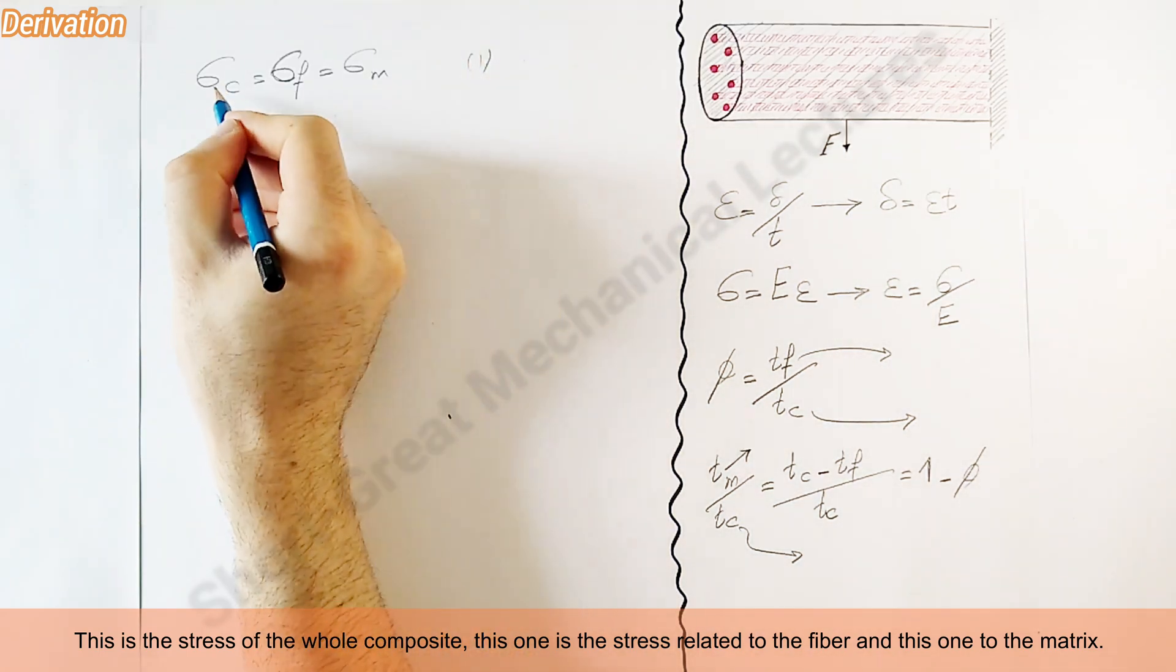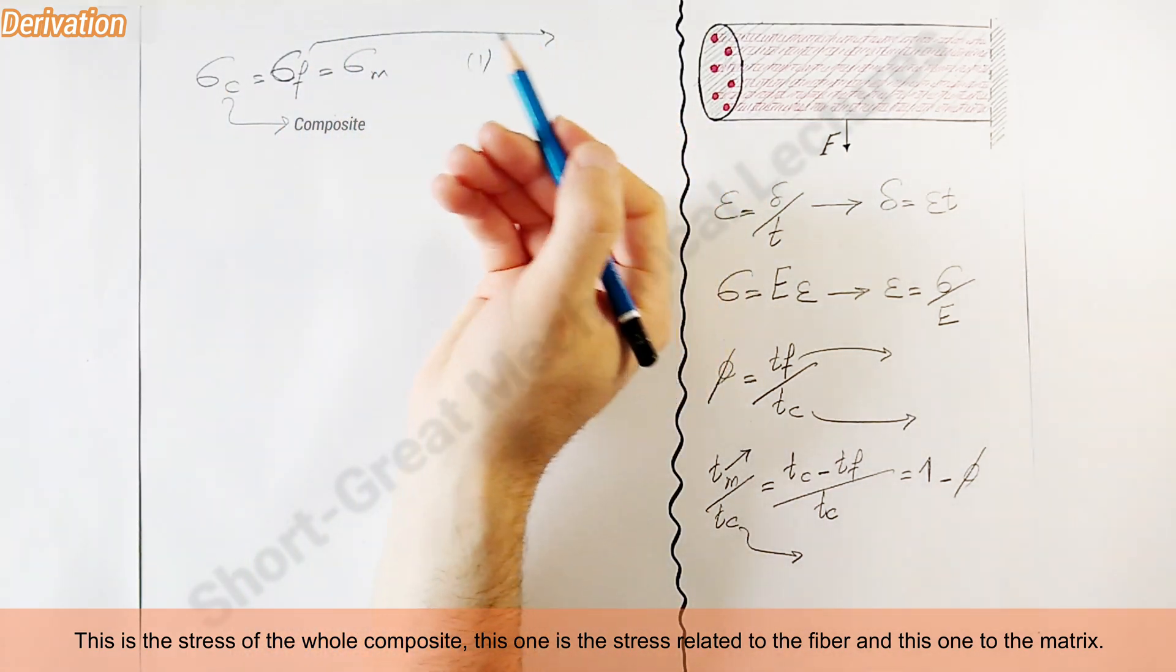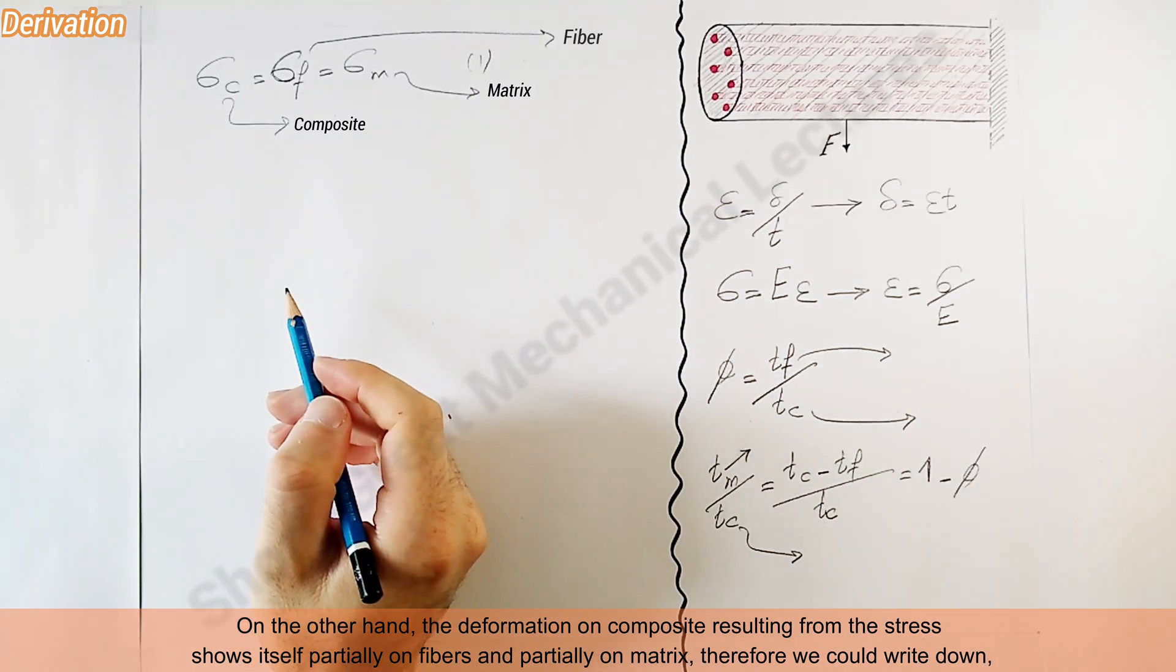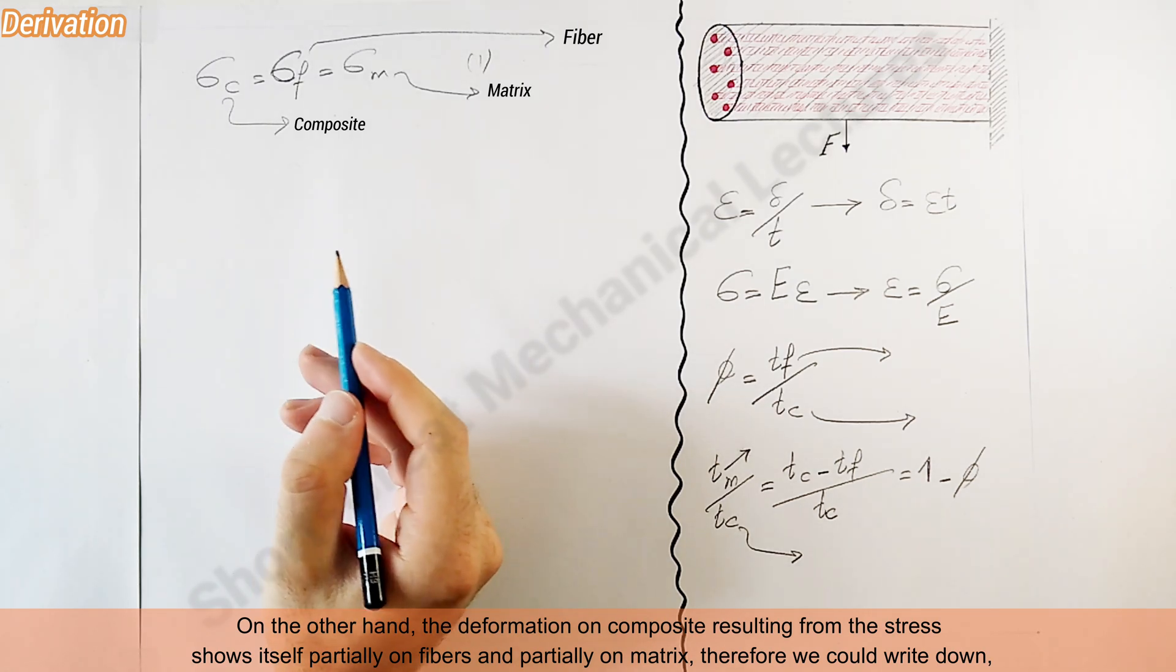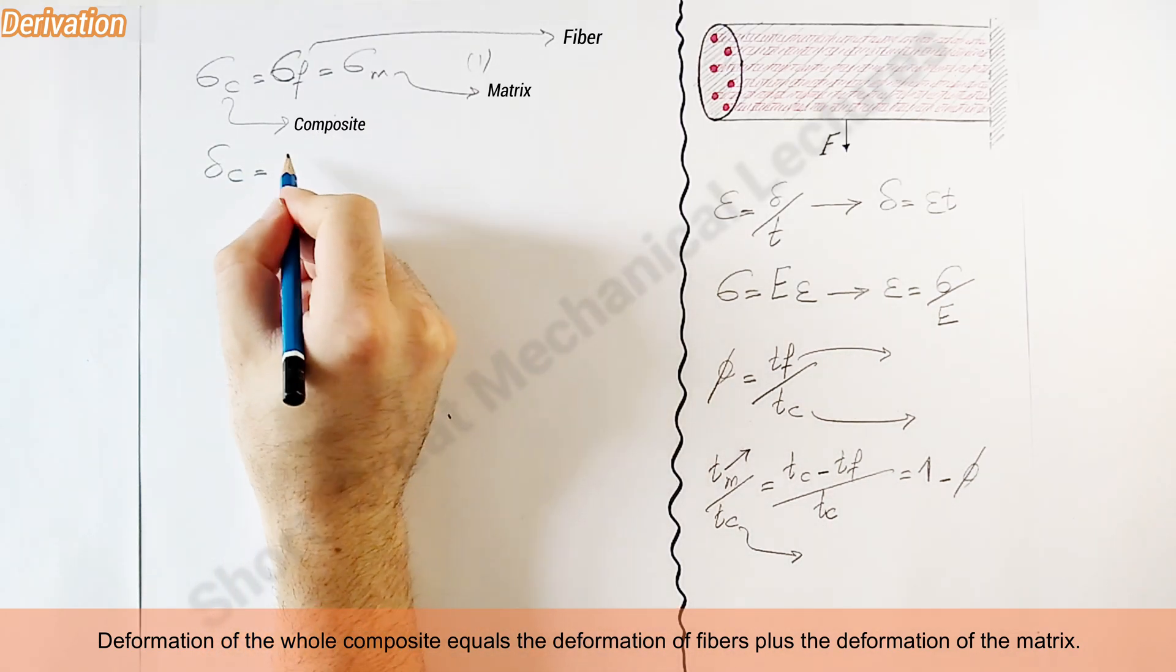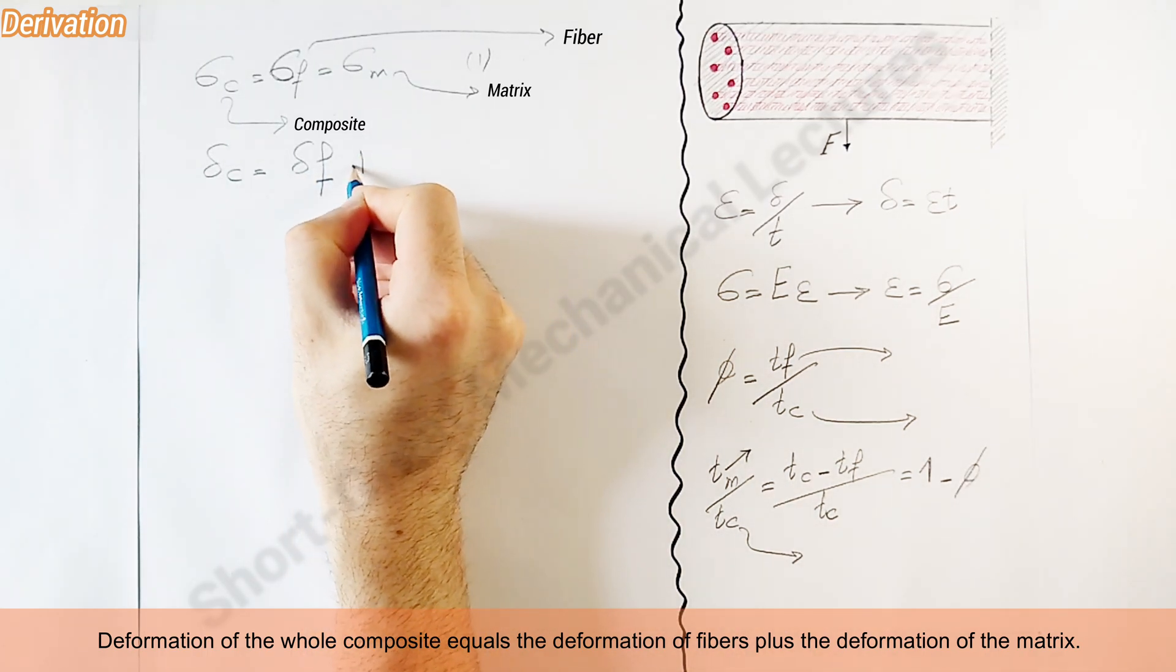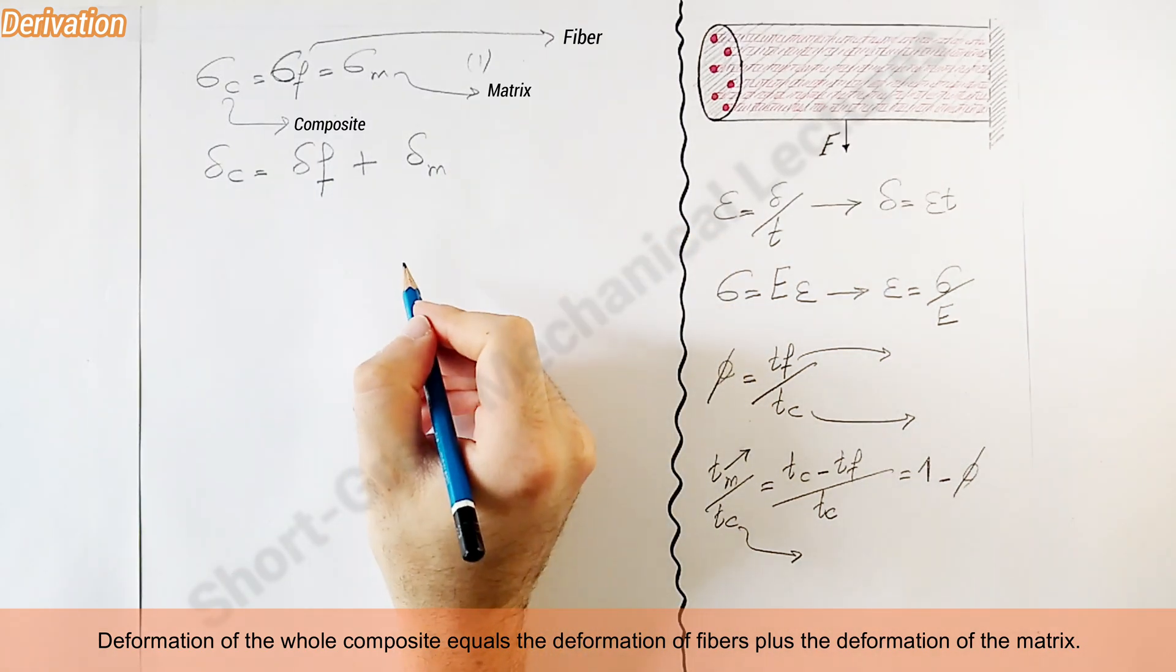This is the stress of the whole composite. This one is the stress related to the fiber, and this one to the matrix. On the other hand, the deformation on composite resulting from the stress shows itself partially on fibers and partially on matrix. Therefore, we could write down the deformation of the whole composite equals the deformation of fibers plus the deformation of the matrix.